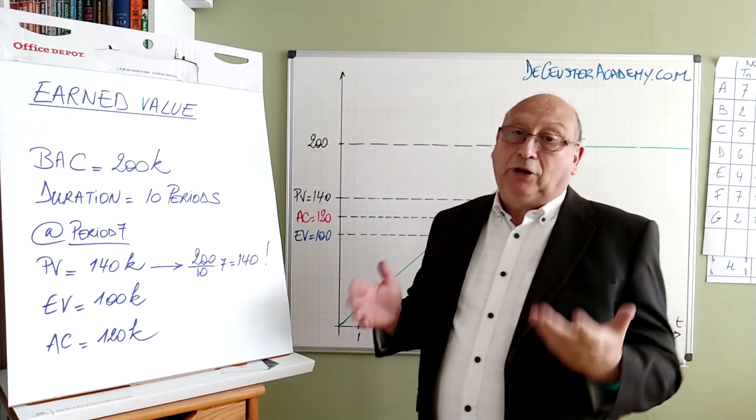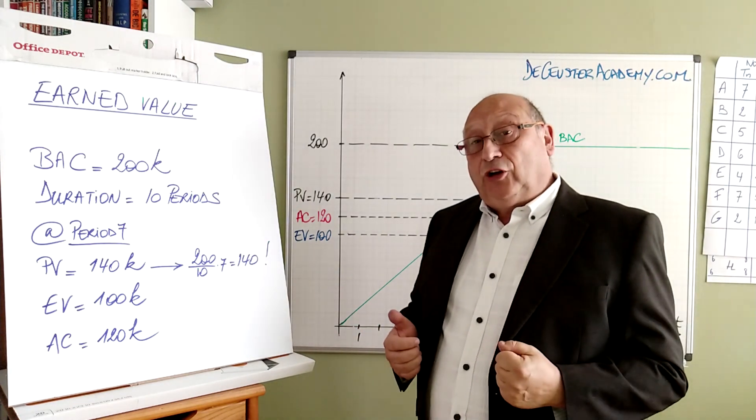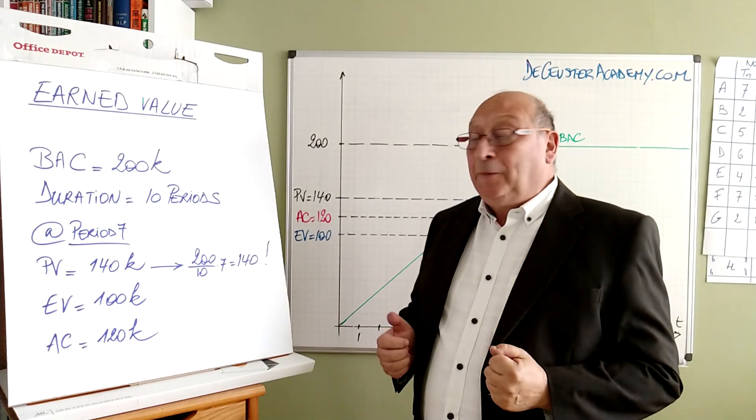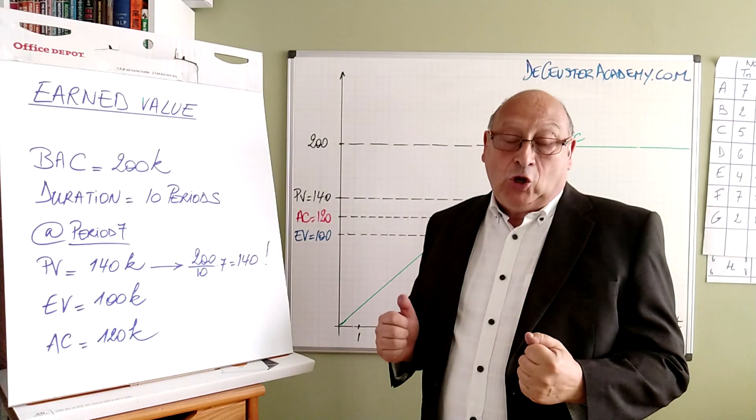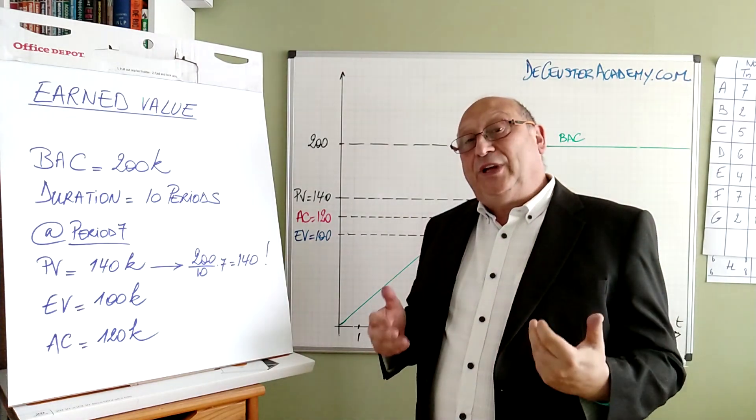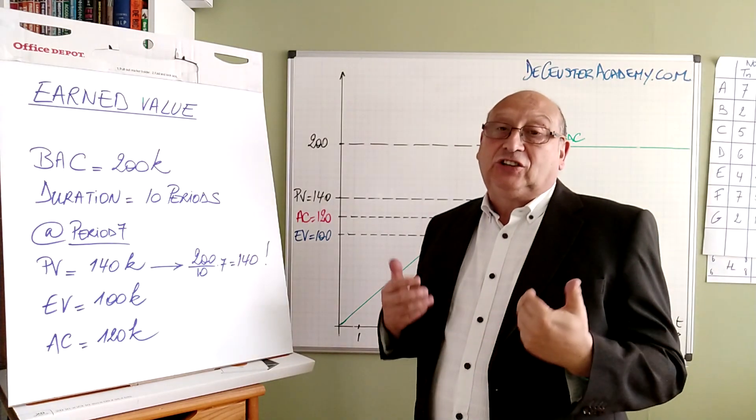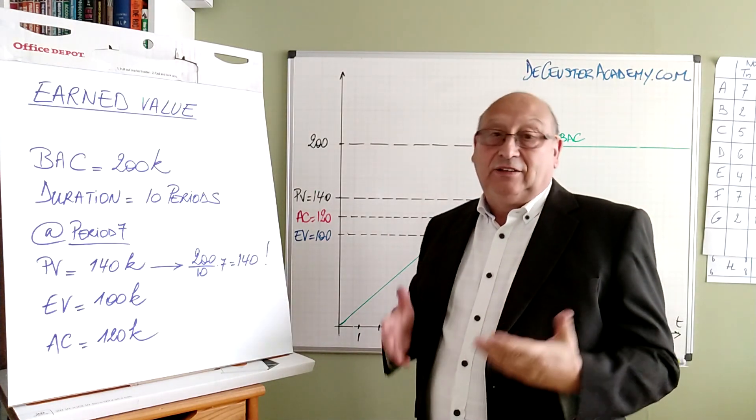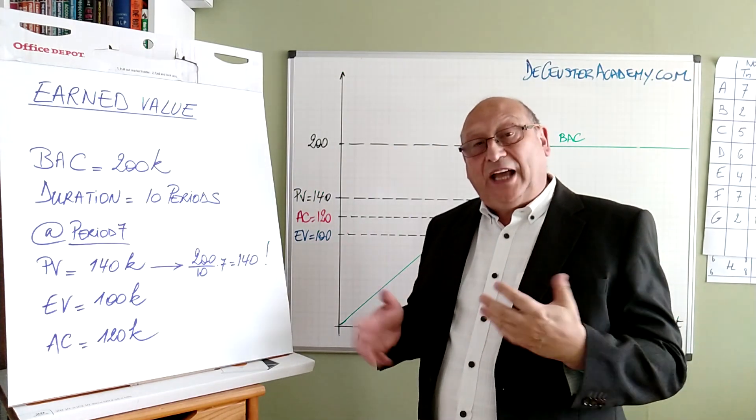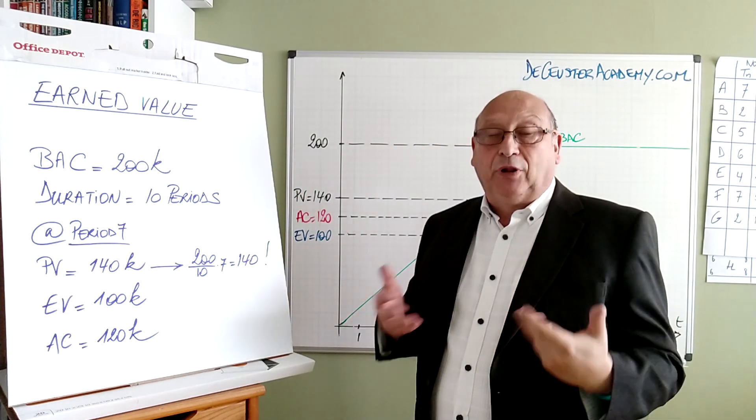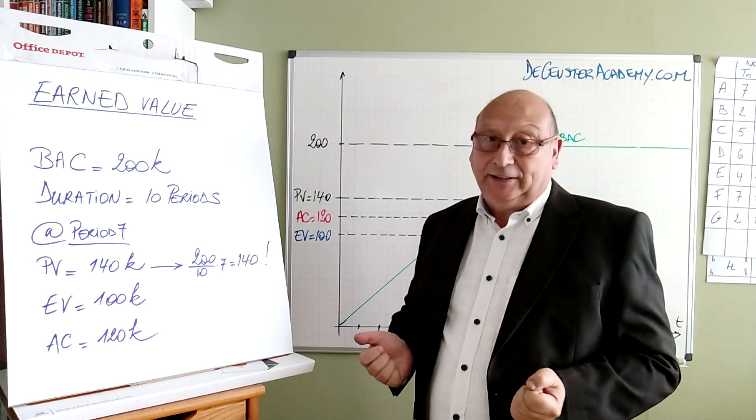We have a project with a budget at completion of 200k. The duration of the project is 10 periods, and that's the basic information that we have. To simplify everything we consider that the cost changes linearly between 0 and the 10 periods, so that we have a very simple relationship, a very simple s-curve which is basically a straight line.